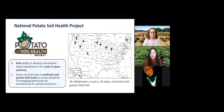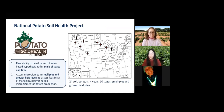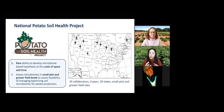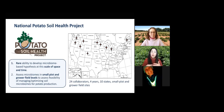The strength of this national project is that we have 10 different states participating on this four-year project with 24 different collaborators, including small research plot trials as well as grower field trials. This gives us the rare ability to look at soil microbiome hypotheses not only over space, but also over time and at different spatial scales. We're able to assess how different treatments — some consistent across states and some tailored to specific regions — interact with the soil microbial community and how those differences in microbial communities impact tuber yield and quality.